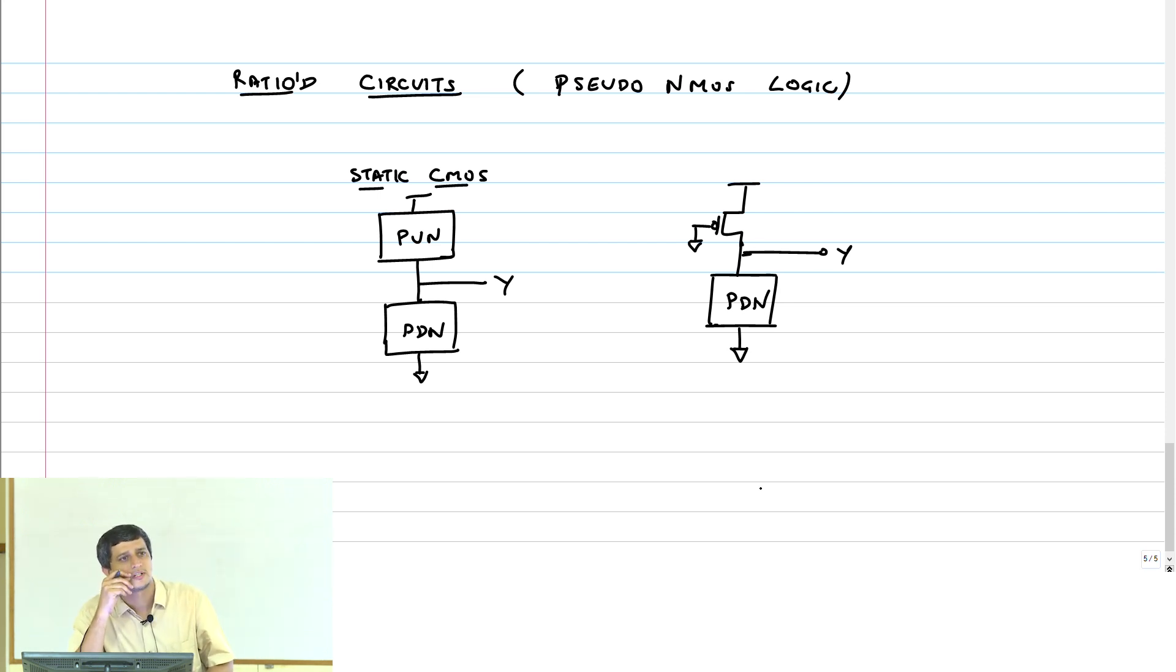The other obvious problem is that when my pull down network is conducting and my output is low, will the output go all the way to 0? No, it cannot go all the way to 0 because I have a fighting between the PMOS transistor and the NMOS stack. Therefore, the output VOL is going to be greater than 0 in this pseudo NMOS logic. We will first calculate what that is.